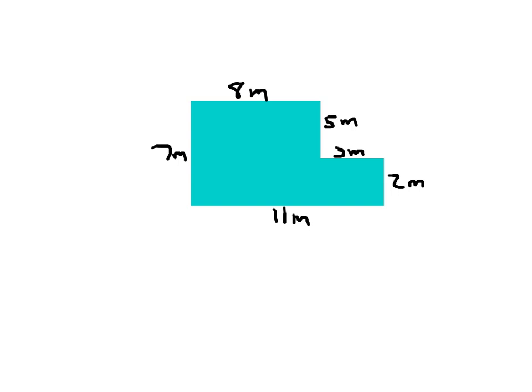I'm going to draw a dividing line to separate this figure into rectangles or squares. It's going to be a horizontal or a vertical dividing line. In this case, I'll draw a vertical dividing line, which now divides this figure into rectangles and squares. There are really two different areas that we figure out, and by figuring out these two areas we can put them together to find the area of the complete complex figure.